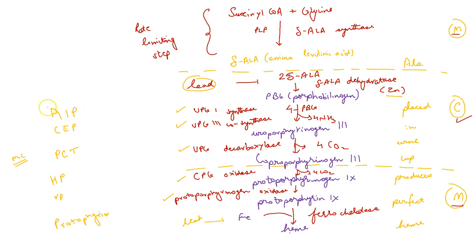These are the porphyrias. The intermediates of the cycle: 'ALA placed in urine cup produces perfect heme.' The mnemonic for porphyrias is ACP HVP, and these are the enzymes which are deficient.